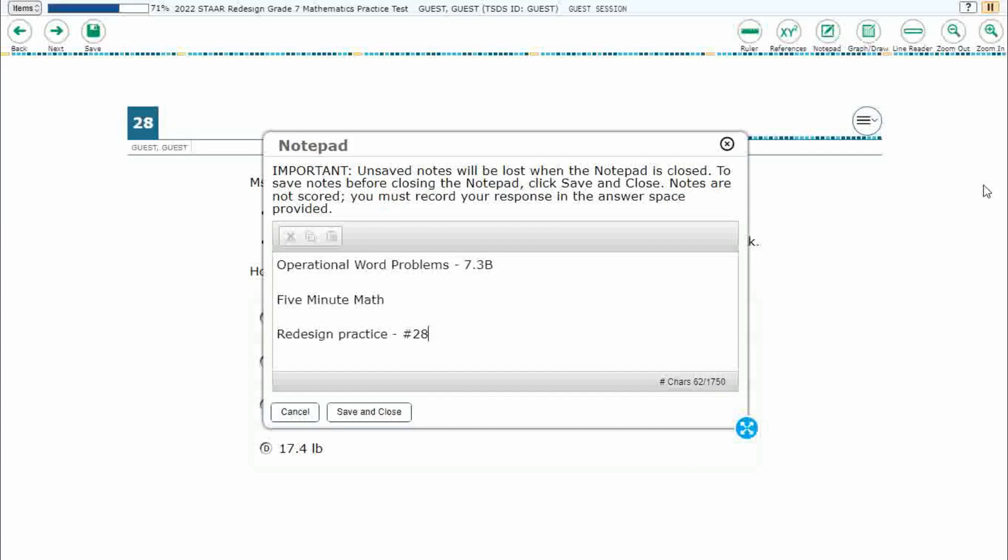Hello and welcome to 5-Minute Math. Today we are looking at the 7th grade concept of operational word problems. This is standard 7.3b in the great state of Texas, and we are using item number 28 off the Redesign Practice Online Start Test.